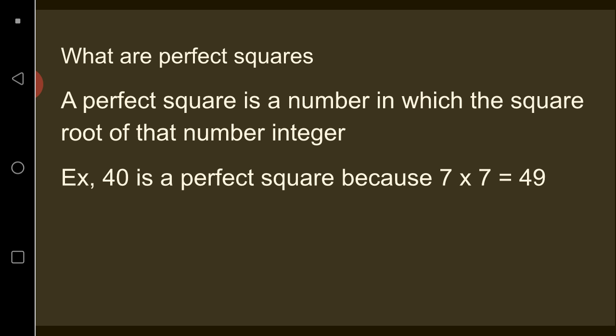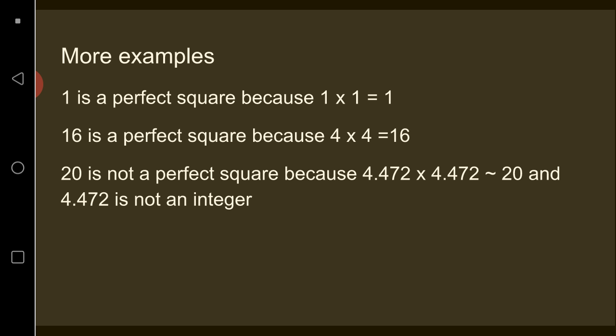More examples would be 1 being a perfect square because 1 times 1 equals 1, and 16 being a perfect square because 4 times 4 equals 16. However, 20 is not a perfect square because 4.472 times 4.472 equals approximately 20, and 4.472 is not an integer or a whole number.